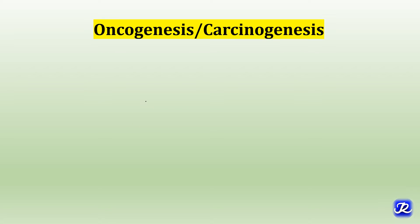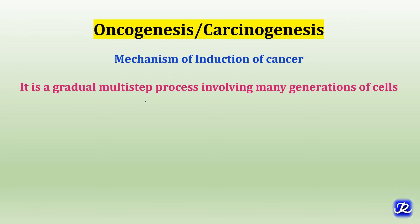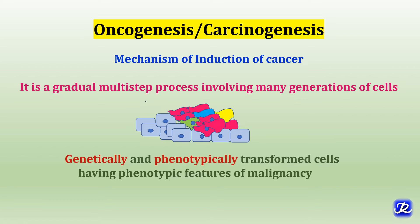Carcinogenesis is also called as oncogenesis. It is a mechanism of induction of cancer. It is a gradual multi-step process involving many generations of cells. The cancer cells are genetically and phenotypically transformed cells having phenotypic features of malignancy like excessive growth, invasiveness, and distant metastasis.